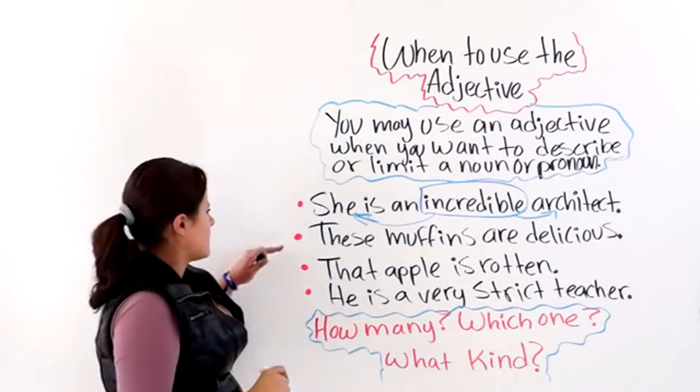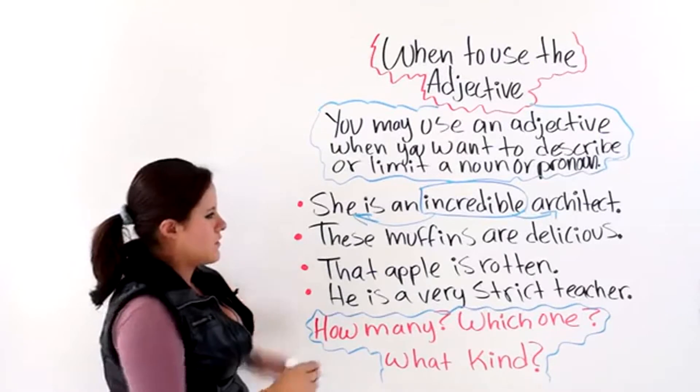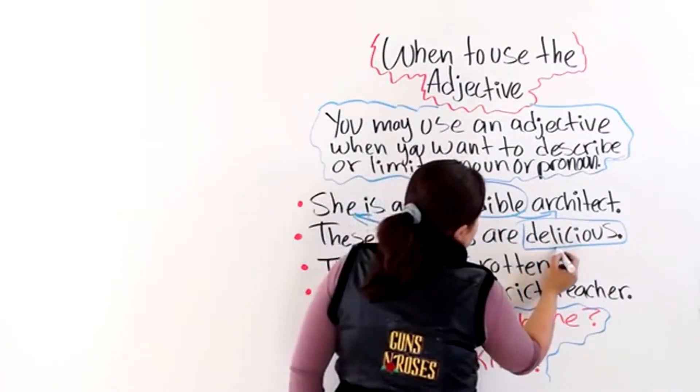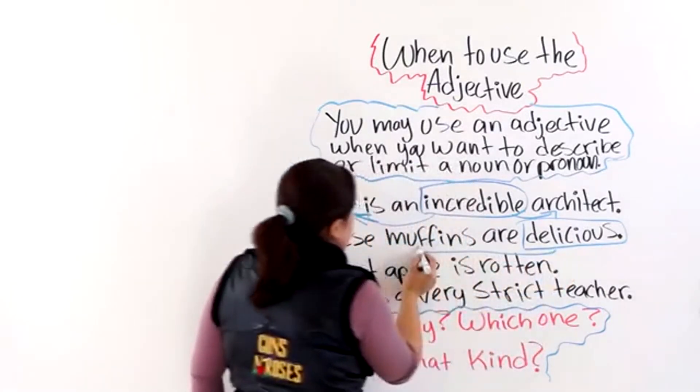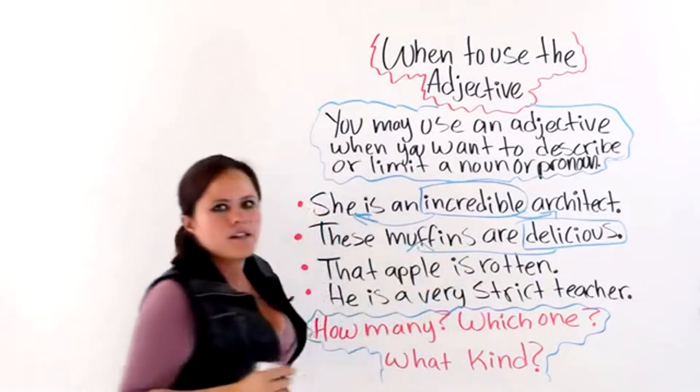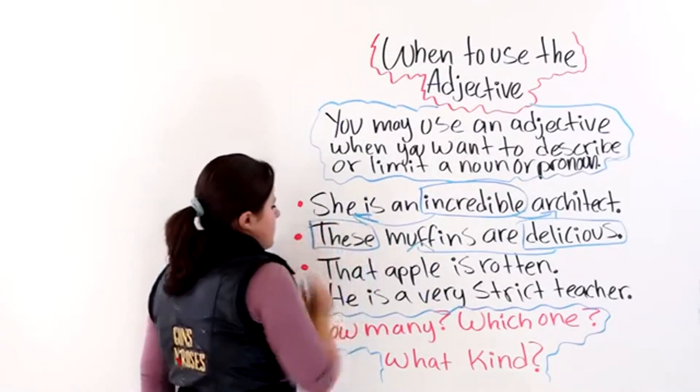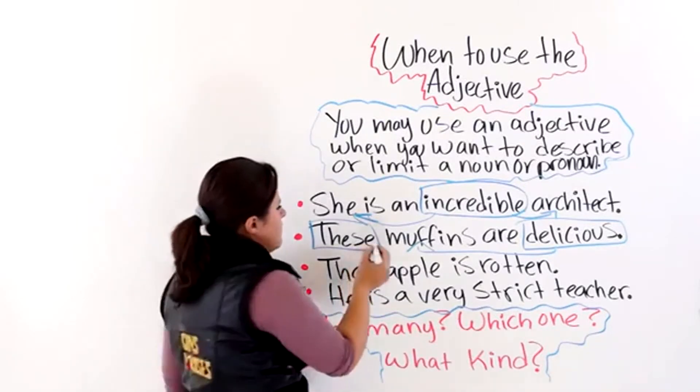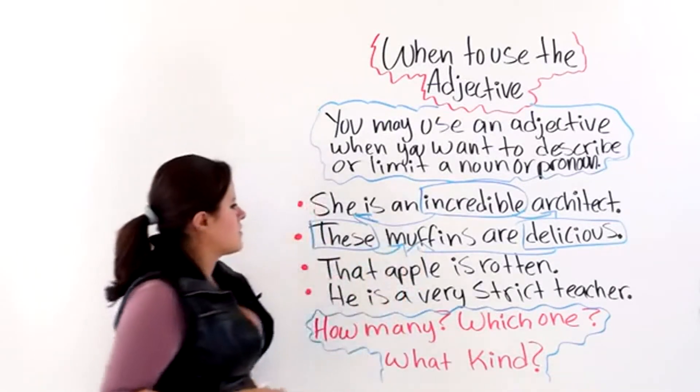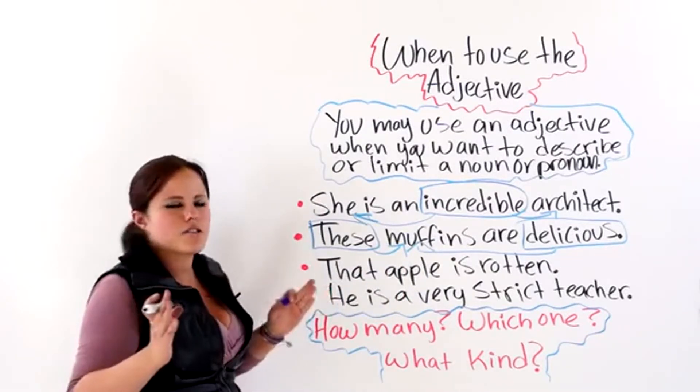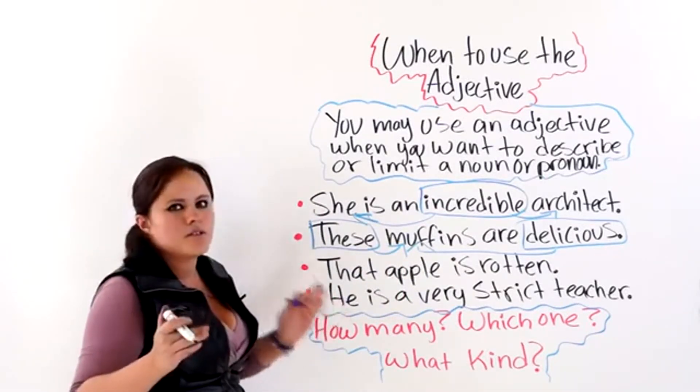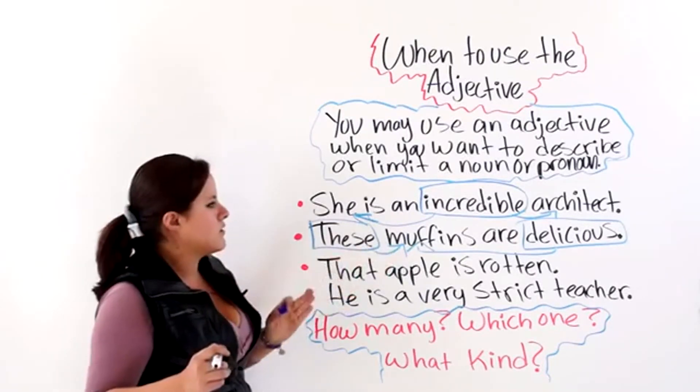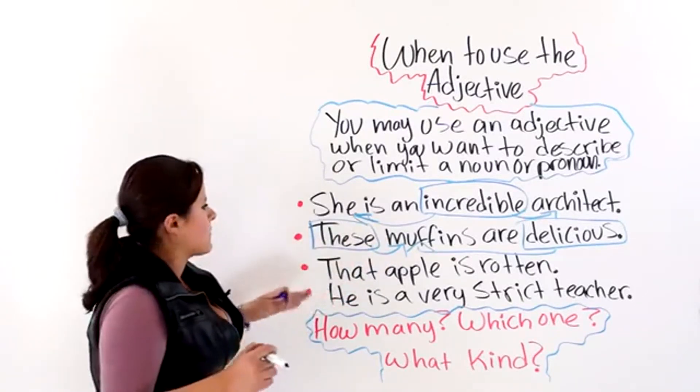The next one says, these muffins are delicious. Delicious is an adjective that is describing the muffins. And these is another adjective that is telling you which one. So, in this second sentence we have two adjectives. You know that you have to use the adjective because you want to say which one and you want to describe the muffin, or the muffins.